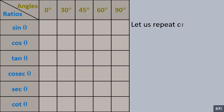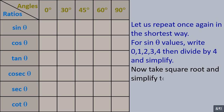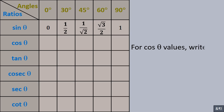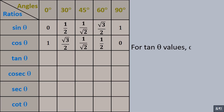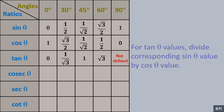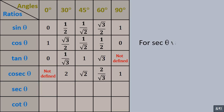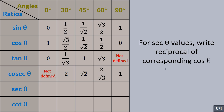Let us repeat once again in the shortest way. For sine theta values, write 0,1,2,3,4, then divide by 4 and simplify. Take the square root and simplify to get sine theta values. For cos theta values, write the sine theta values in reverse order. For tan theta values, divide the corresponding sine theta value by the cos theta value. For cosec theta values, write the reciprocal of corresponding sine theta values. For sec theta values, write the reciprocal of corresponding cos theta values.